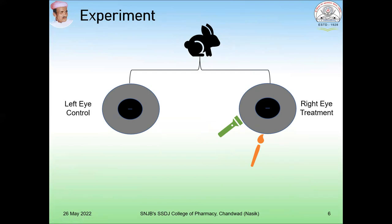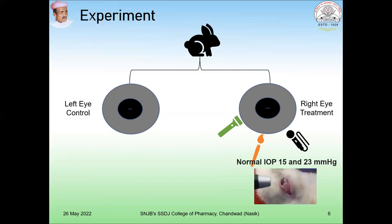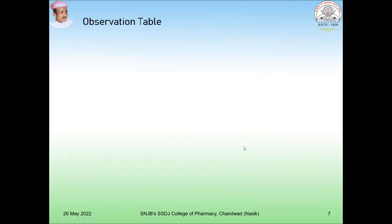The third parameter is to measure intraocular pressure, because mydriasis and miosis can lead to alterations in intraocular pressure in the rabbit eye. A tonometer is the instrument used to measure intraocular pressure. Normally, the intraocular pressure in a rabbit is between 15 and 23 mmHg. This picture shows how a tonometer is used to check intraocular pressure in the animal.